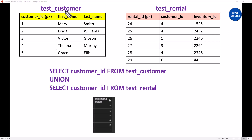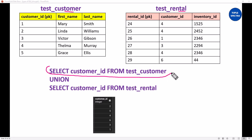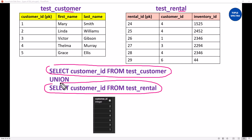Let us take a look at an example. We have a table called test_customer and a test_rental table. Let's assume we want to have a select statement and we want to combine it with a second select statement. We want to obtain the customer_id column from the test_customer table and combine it with the customer_id column from the test_rental table.